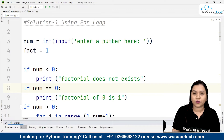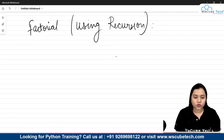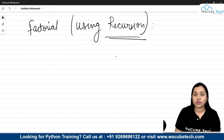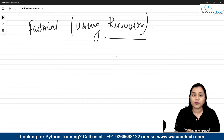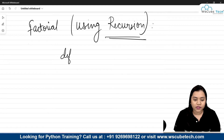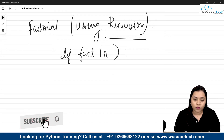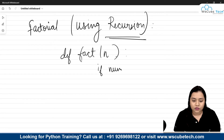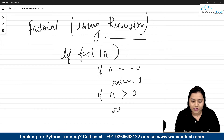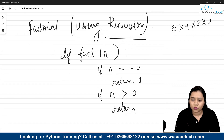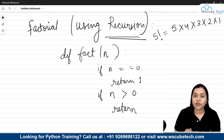Now let's talk about solution 2 using recursion. Recursion means when a function calls itself inside a function. We will create a function 'def factorial(number)'. Inside, we give the condition: if number equals 0, return 1. Now, factorial of 5 can also be found as 5 multiplied by factorial of 4, since if we know factorial of 4 we can find factorial of 5.